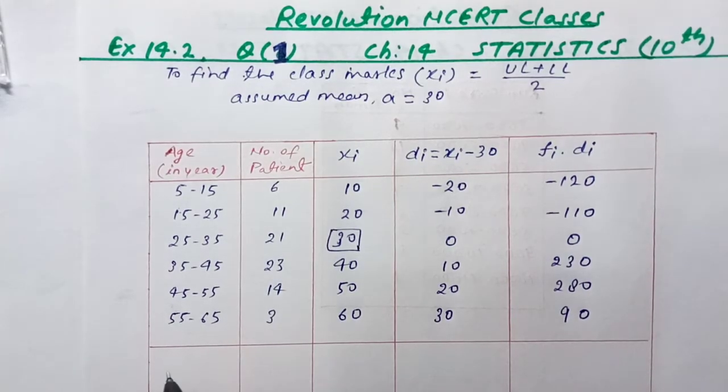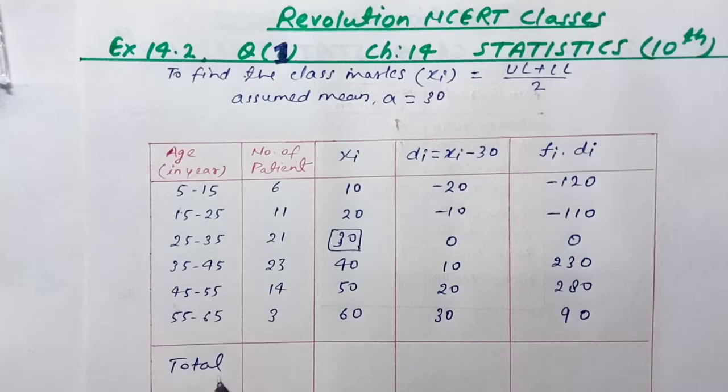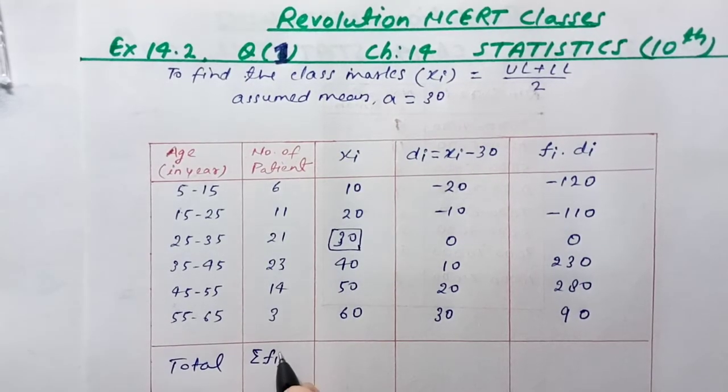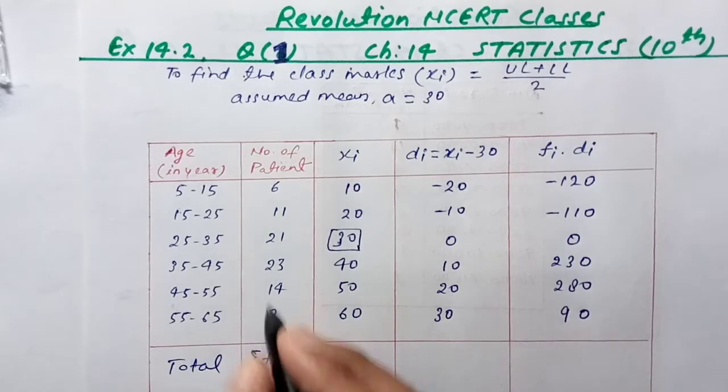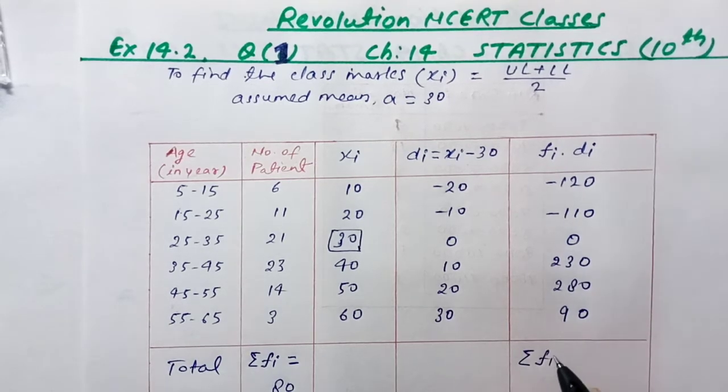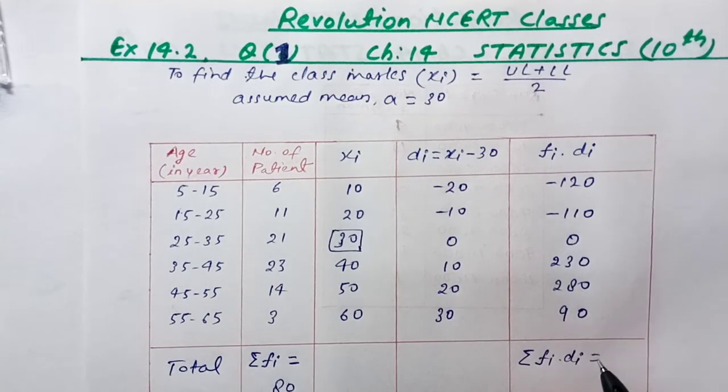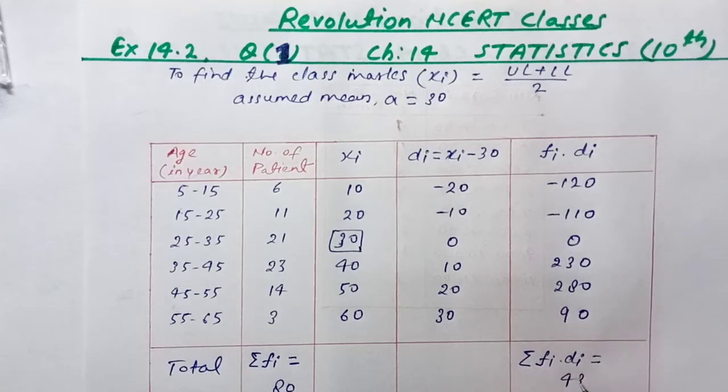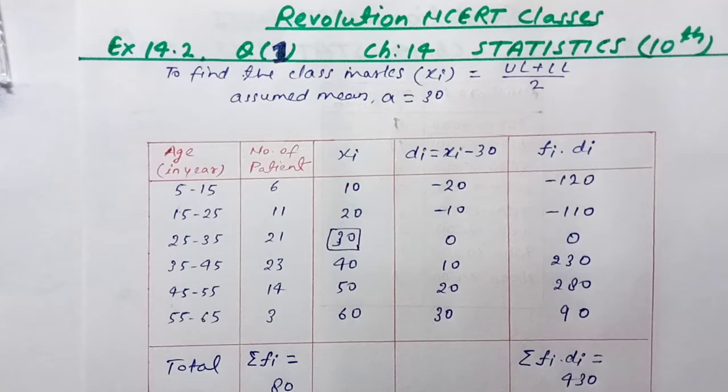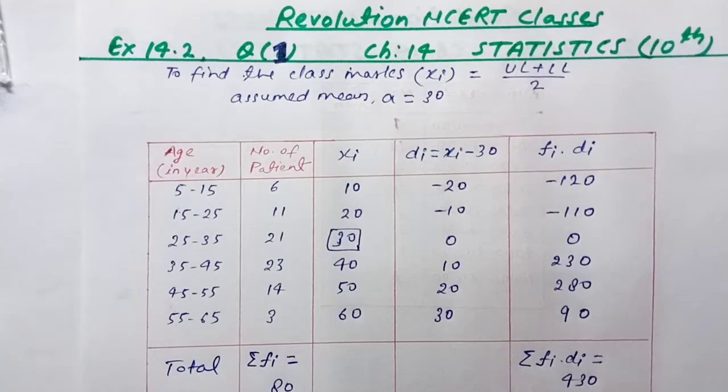Now we total everything. The total frequency, sum of f_i equals 80. The sum of f_i times d_i equals 430. From the table we obtained these values.